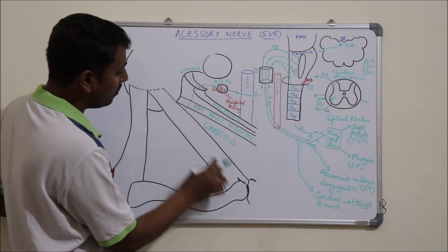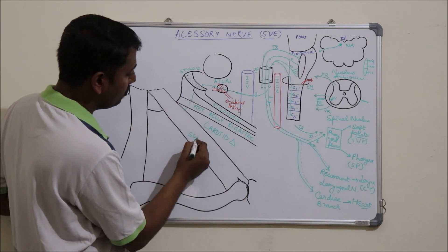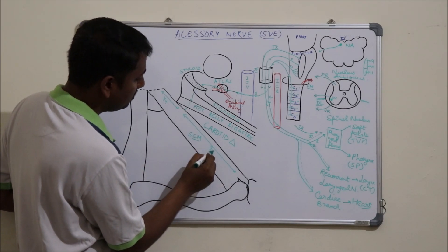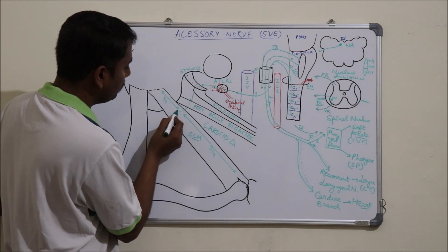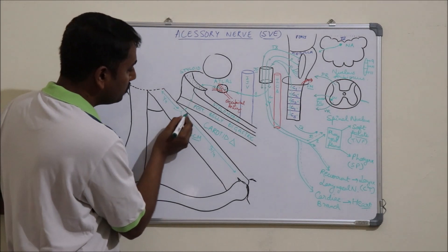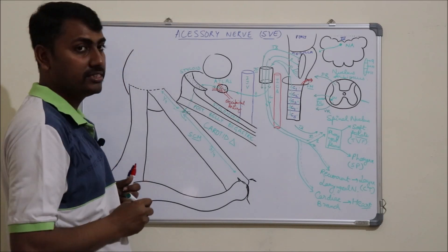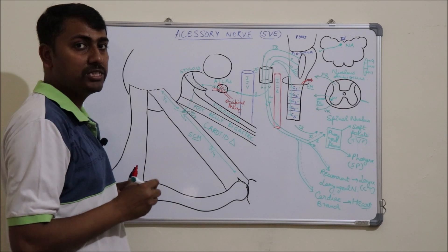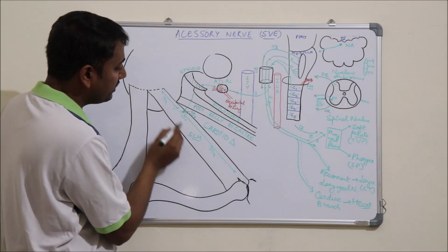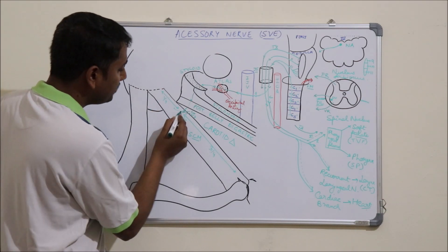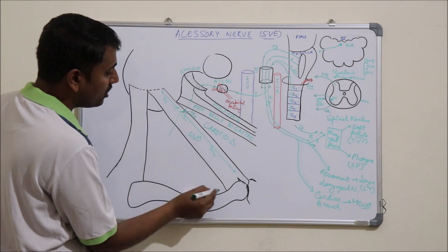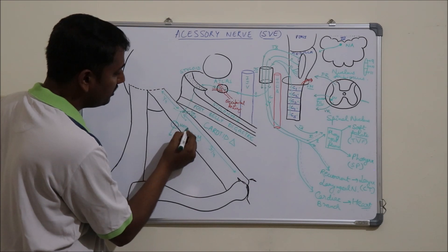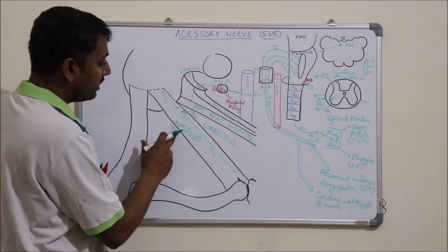Here the nerve enters the anterior border of the sternocleidomastoid muscle at the junction of the upper one-fourth and lower three-fourths, passes deep to this muscle, and supplies it. At this level, branches of the C2 and C3 cervical nerves also communicate with the spinal nerve, providing proprioceptive fibers to the sternocleidomastoid. After supplying this muscle, the nerve passes downwards and emerges from the posterior border of the sternocleidomastoid at its middle, which is known as the nerve point.